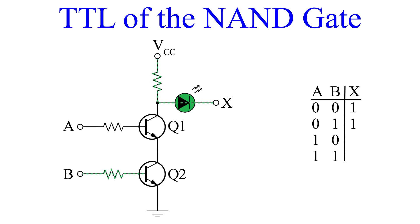How about A equals 1 and B equals 0? Q1 is forward biased and current gets stopped after Q1's emitter going into Q2's collector. Since current cannot flow, the LED remains lit. So A equals 1 and B equals 0 gives us an output of 1.